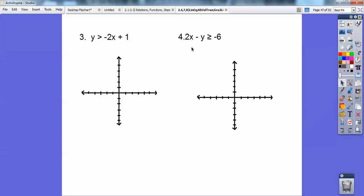y is greater than, dotted line, -2x + 1. So I'm going to put a point right there. y equals -2x + 1. And then from here, go down 2 to the right 1, and connect them up. That's your line right there. And then test (0, 0). I tested 0, 0, 0 greater than 0 + 1. That's not true, so I shaded that side.